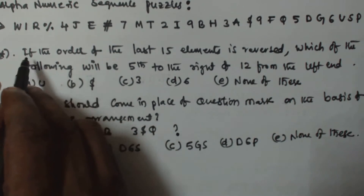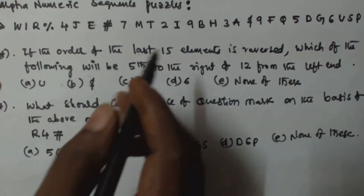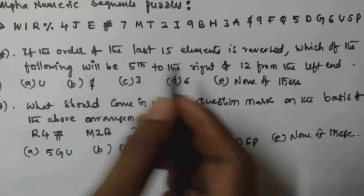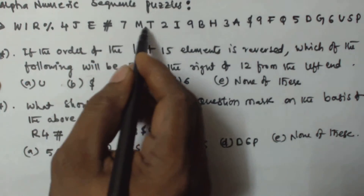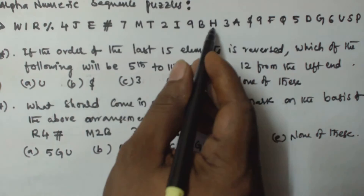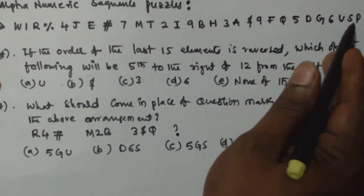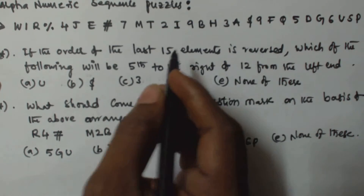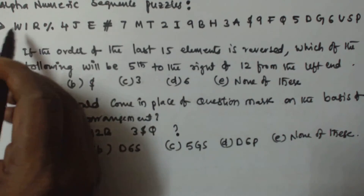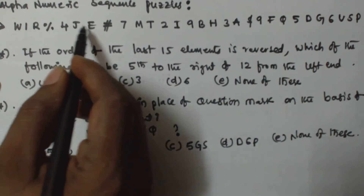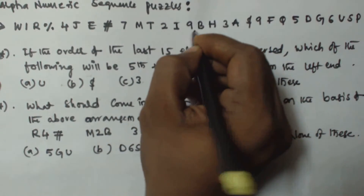It is given that the order of the last 15 elements is reversed, so first we have to identify the last 15 elements. We count all elements: 1 2 3 4 5 6 7 8 9 10 11 12 13 14 15 16 17 18 19 20 21 22 23 24 25 26 27 28 29 — so there are 29 elements total. We remove the first 14, so the last 15 start from position 15, which is element 9.